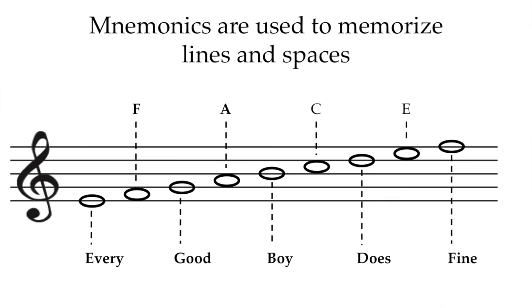The problem with this method is if you want to play the last line of the treble clef, you have to think, every good boy does fine. Oh, it's an F. That's slow and painful because you have to go through the whole acronym to get to that F. It also teaches you to memorize that that line is an F, but it doesn't teach you which F.